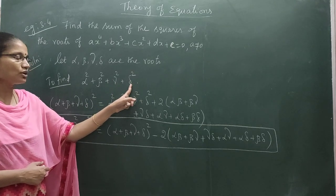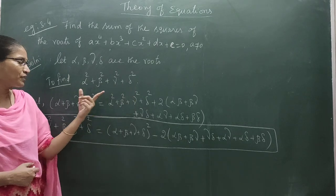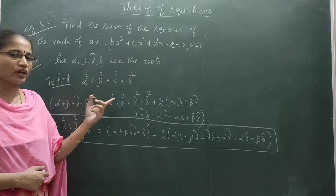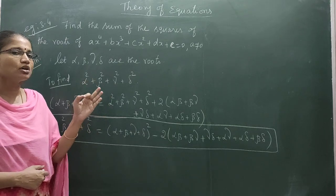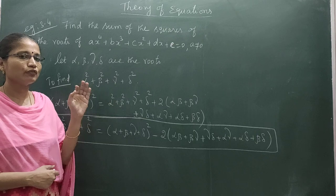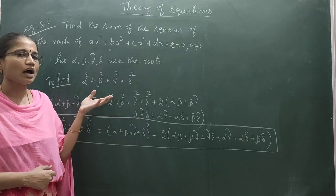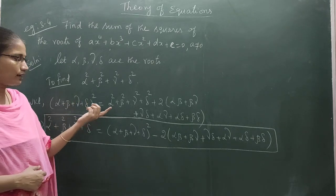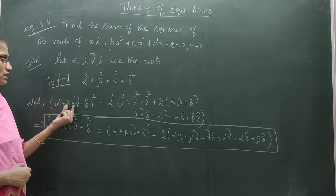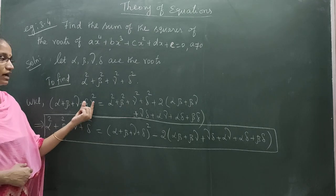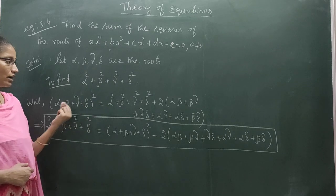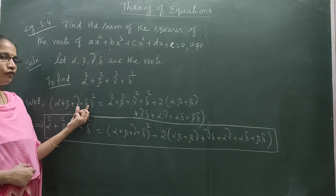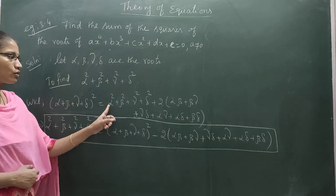To find this, we are going to use an algebraic identity. We know the identity for (A + B + C)² for 3 terms. We extend the same result for 4 terms. So (alpha + beta + gamma + delta)² expands just like the (A + B + C)² formula, giving us the sum of individual squares: alpha², beta², gamma², delta², plus 2 times the cross terms.